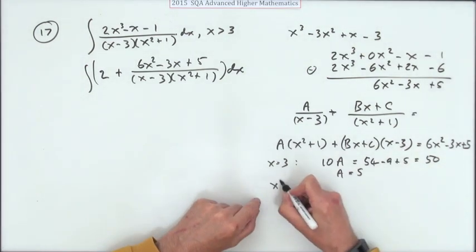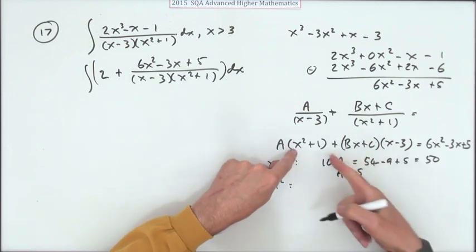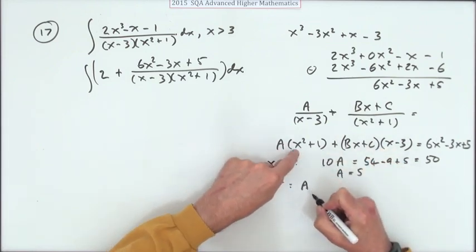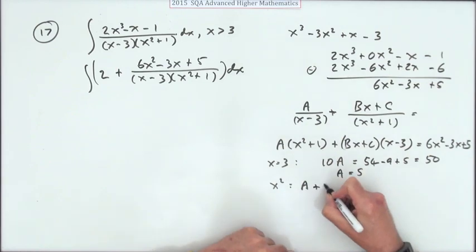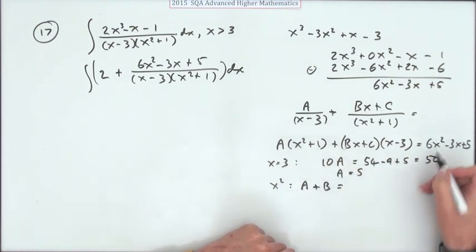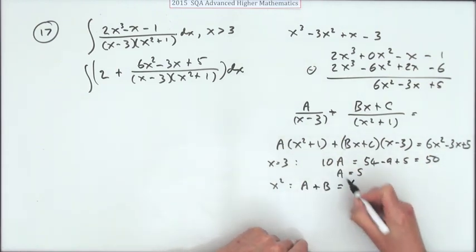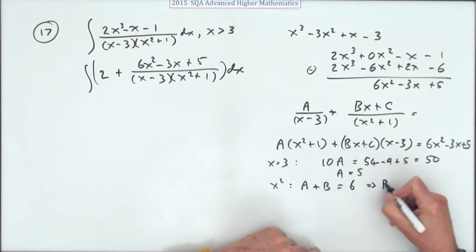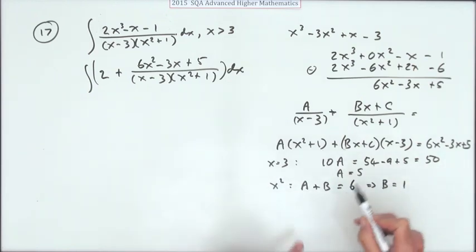Now there are no other knockout values. I'll just compare the x² terms. That would be simpler because the only way of making x² out of this would be to have A and B form the x². So A and B must make 6. Since A is 5, that means that B is equal to 1.